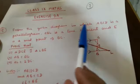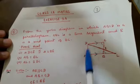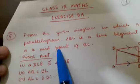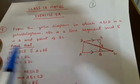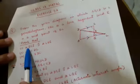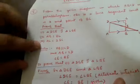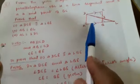From the given diagram in which ABCD is a parallelogram, ABL is a line segment, and E is the midpoint of BC. Prove that: first, triangle DCE is congruent to triangle LBE; second, AB is equal to BL; and third, AL is equal to 2DC. Given: AB parallel to CD and AB equal to CD because ABCD is a parallelogram, and CE is equal to BE because E is the midpoint of BC.